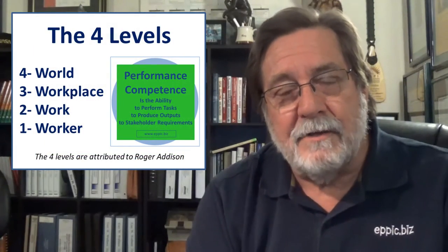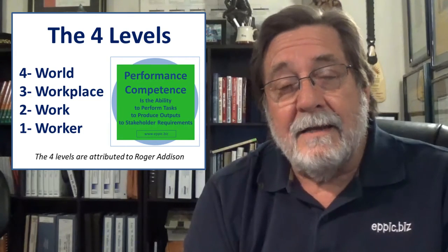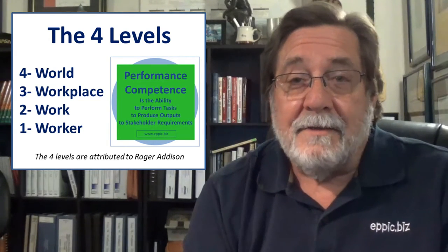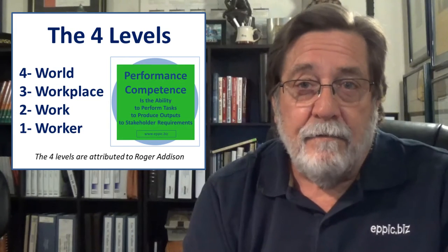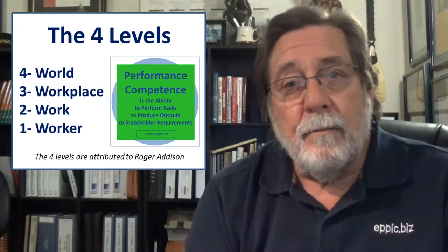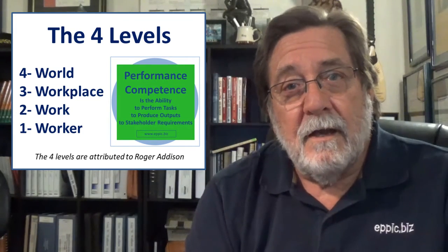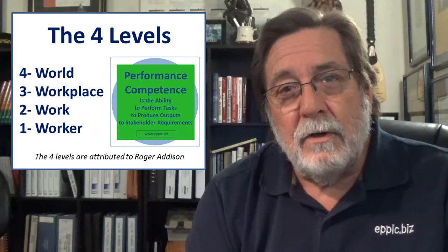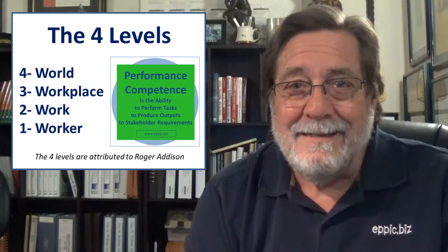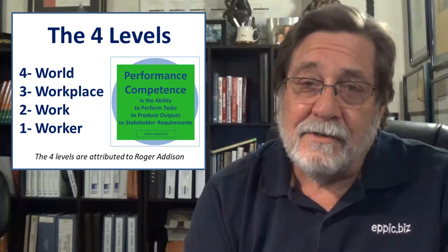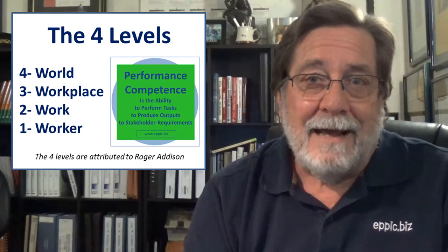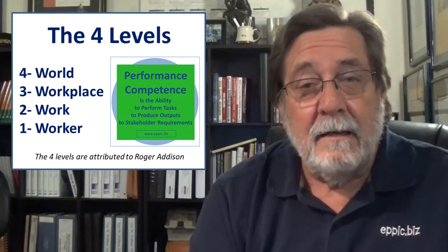The four levels refer to something that Roger Addison coined. At the first level, there's the worker; at the second level, there's the work itself; third, the workplace; and fourth, the world. This is also known as individual, process, and organizational performance. The world is a new element, not considered too often by many.